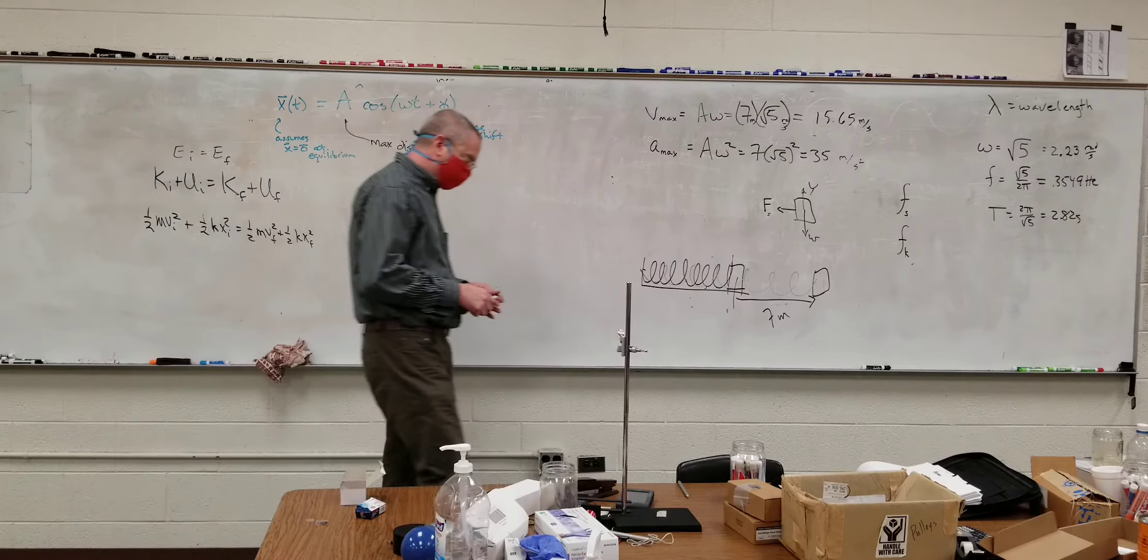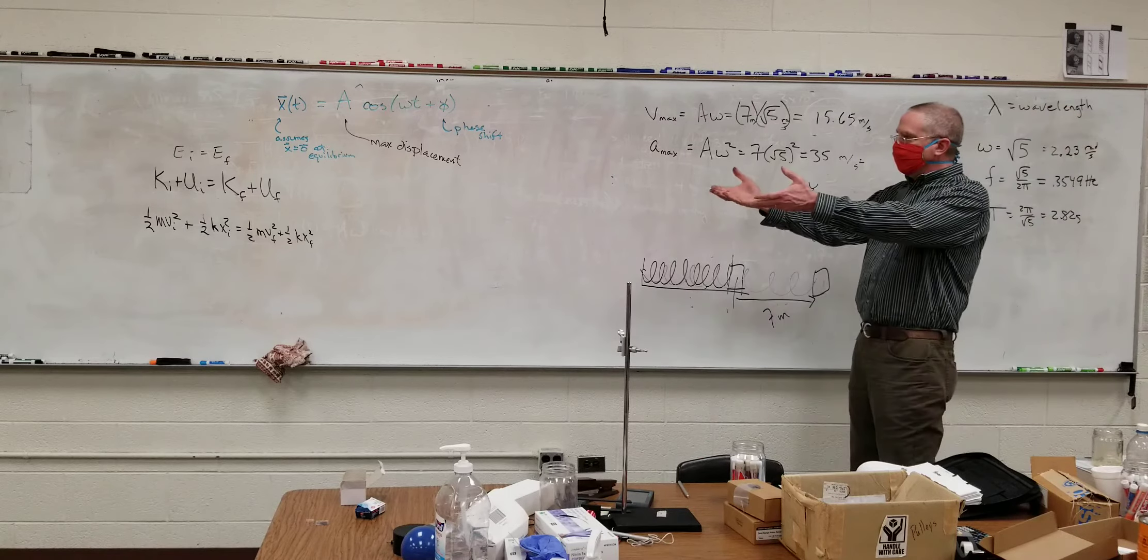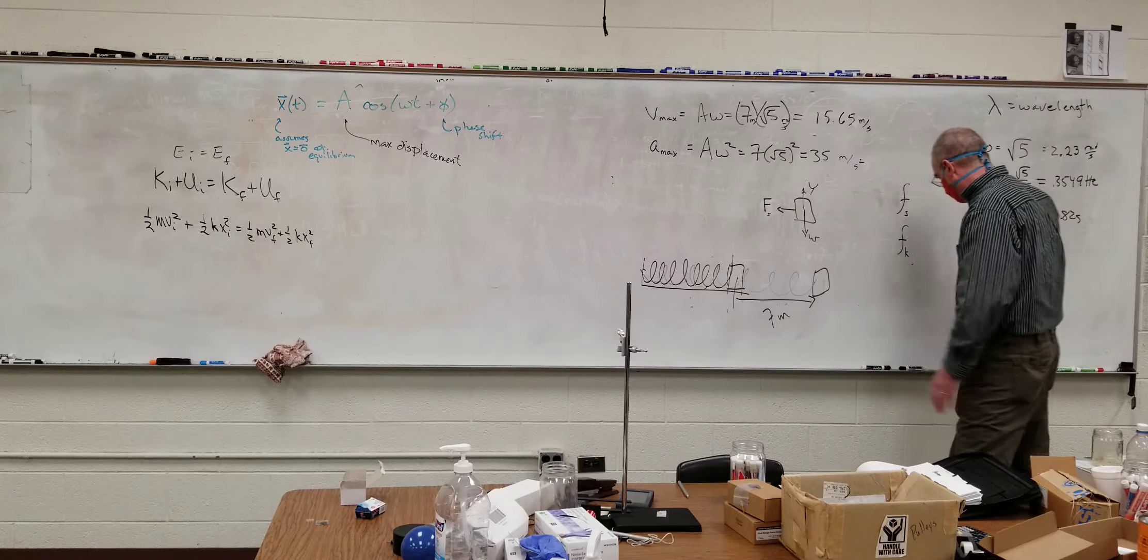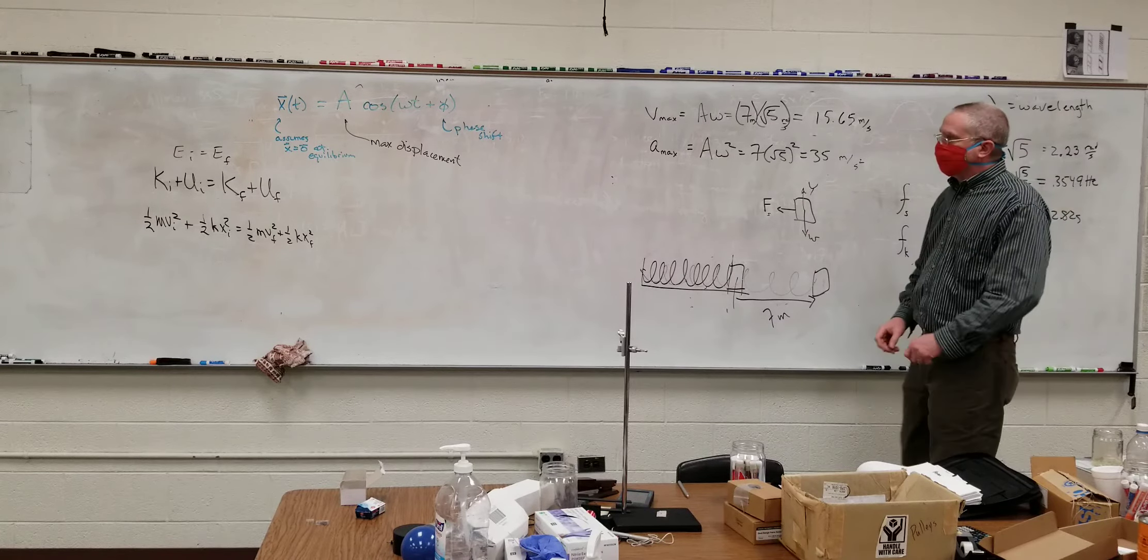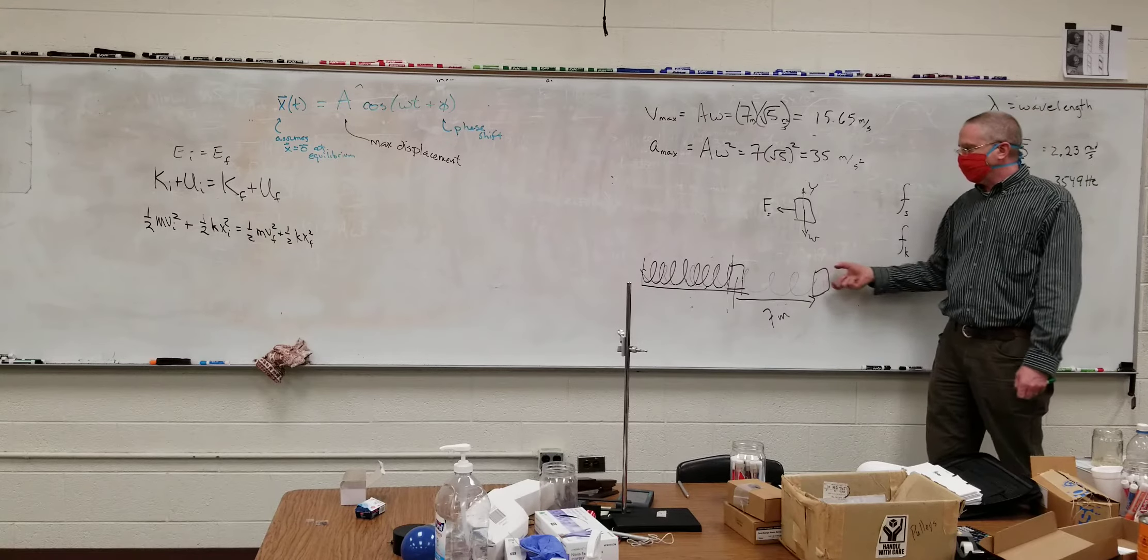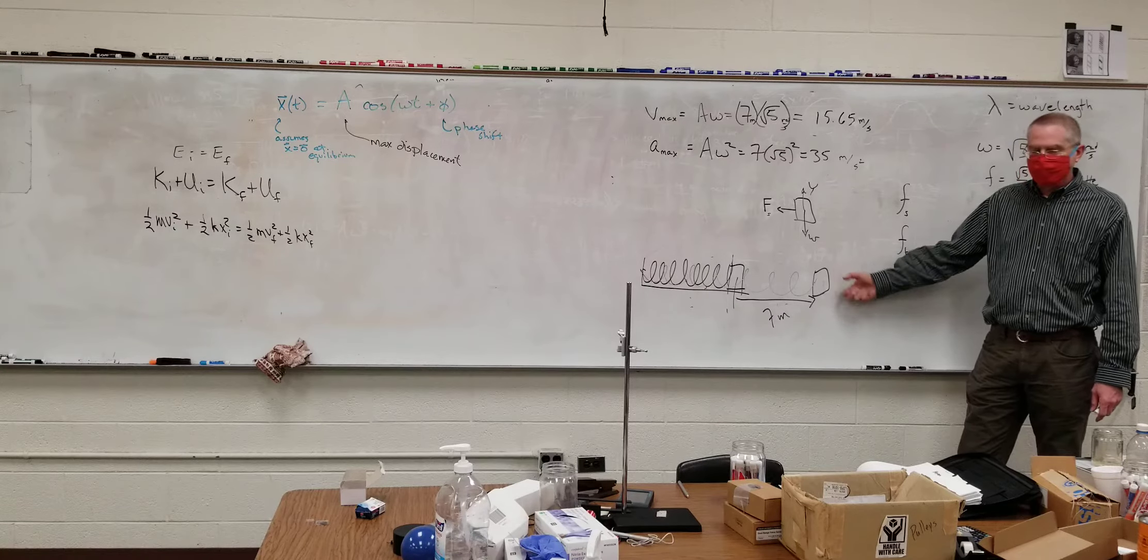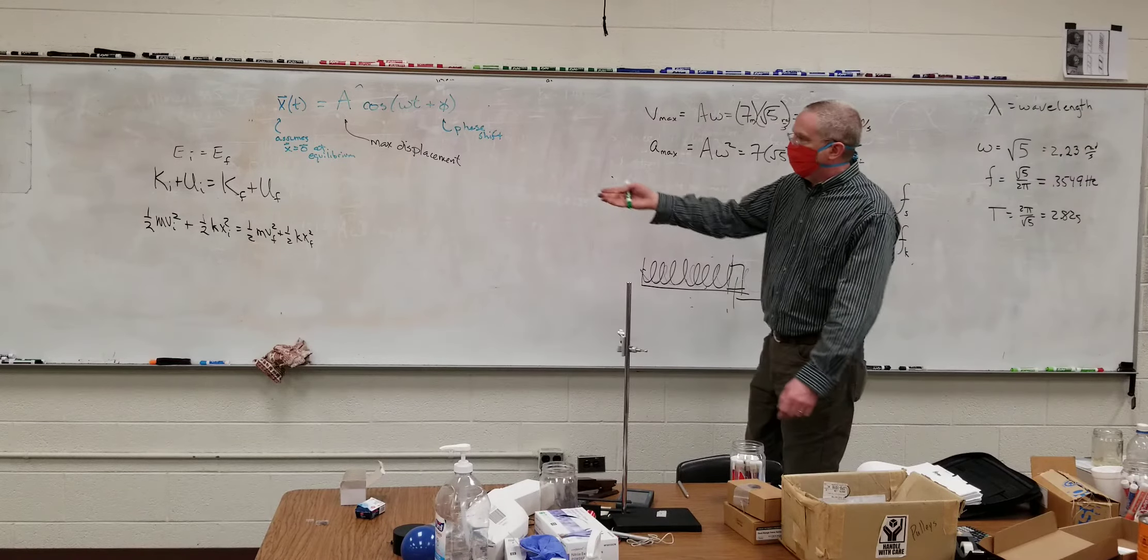So we've set up our energy equation. Energy initial equals energy final. Now let's see what we can get rid of. We're trying to figure out where the speed is at maximum. So I pull this thing out, I let go. This is my initial right here. What can we get rid of?